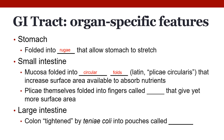To give you an idea of the significance: without any folds, the small intestine would have about 3.6 square feet of surface area. With the circular folds and villi, it ends up being around 2,200 square feet — dramatically increasing the surface area available for absorption. Moving on to the large intestine, it is tightened by the taeniae coli into pouches called haustra.